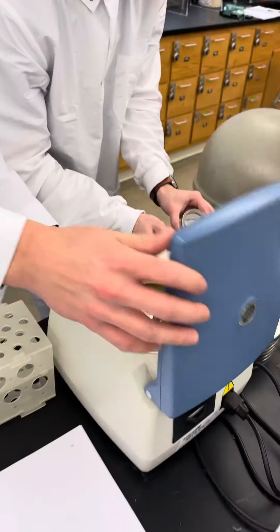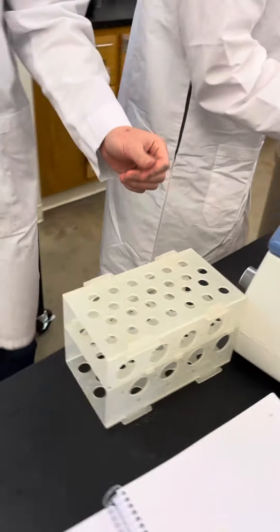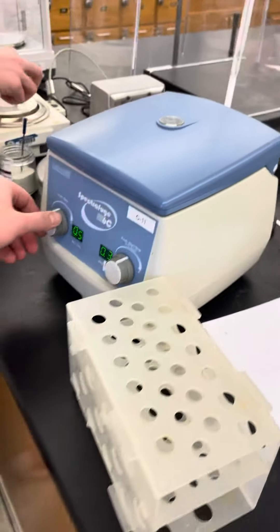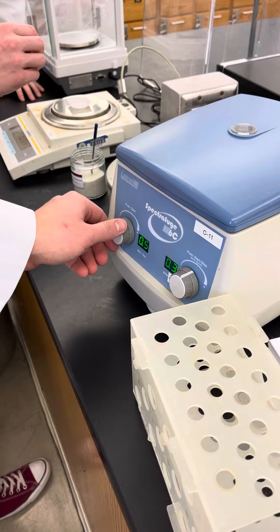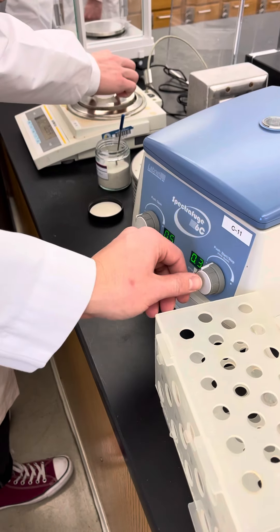If there's three, then you put it into a triangle, and you're going to close it. You're going to set the time that you want it to go for, the RPMs, and then you're just going to press start.